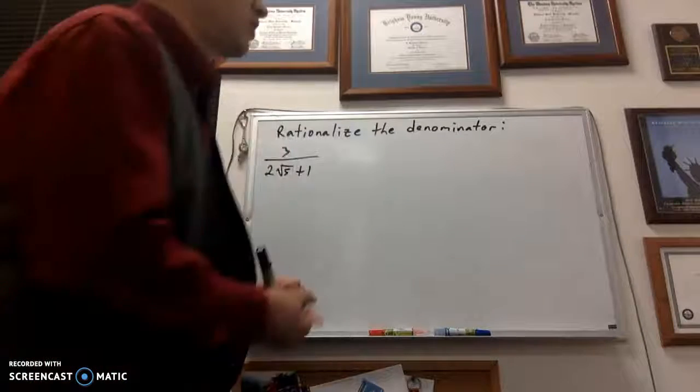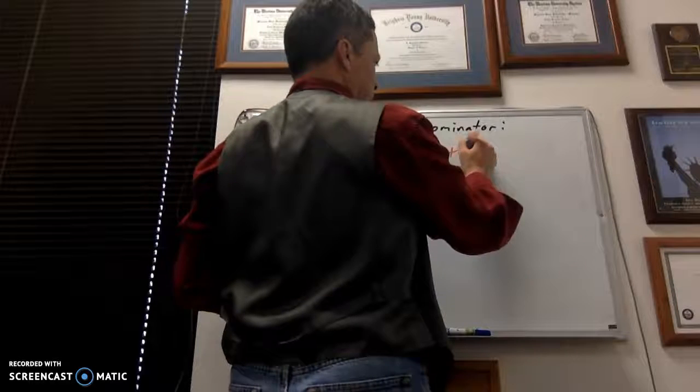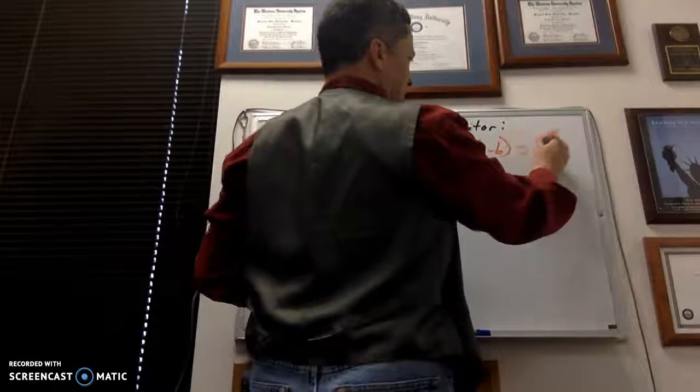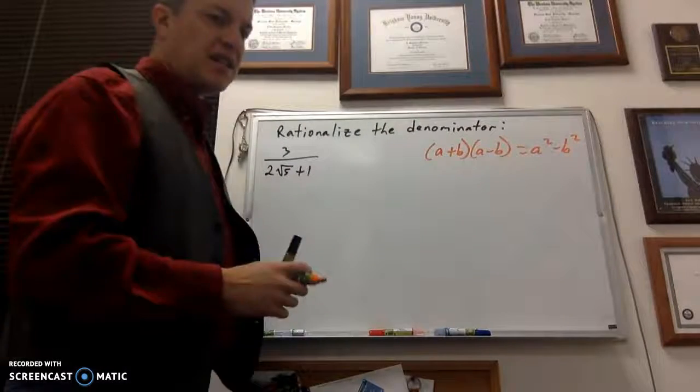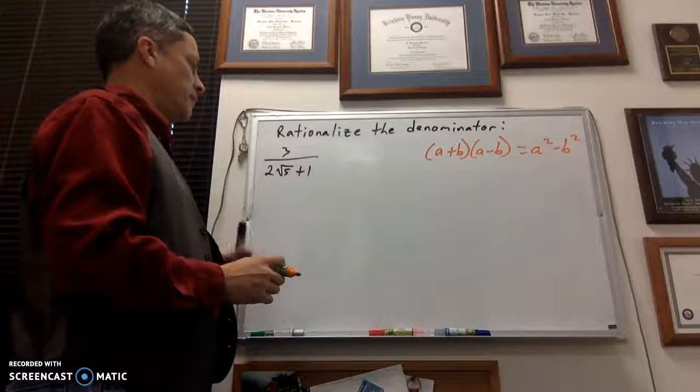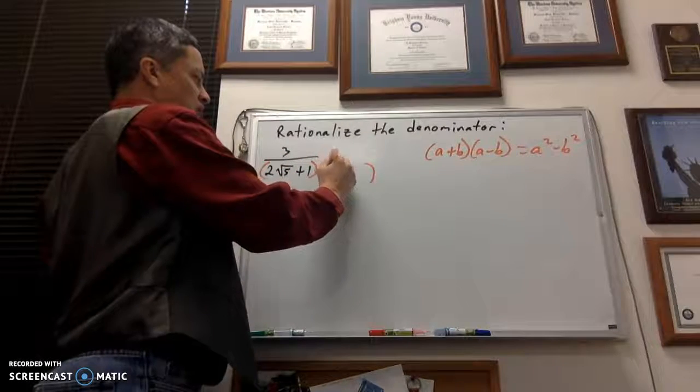So let's backtrack for just a minute here. Do you remember when we did a plus b times a minus b, and that became the difference of squares? We're going to use that idea right here. So I'm going to multiply top and bottom here by what's called a conjugate.